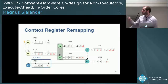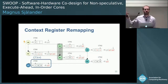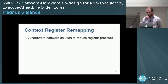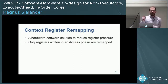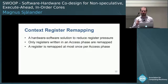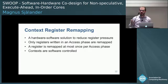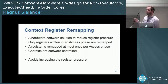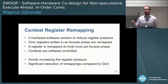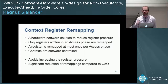When we come back to A3, the context is set to zero, and we have one register mapped to the architectural register, used throughout the application until we again encounter a long-latency load. To summarize: the context register mapping is a hardware-software solution to reduce register pressure. Only registers written in the access phase are remapped, and a register is remapped at most once per access phase — only if written, and only on the first write. The contexts are software controlled. This avoids increasing register pressure and significantly reduces remappings compared to an out-of-order core, which constantly renames a register on every write. Here we do a very limited amount of renaming and need far fewer registers.